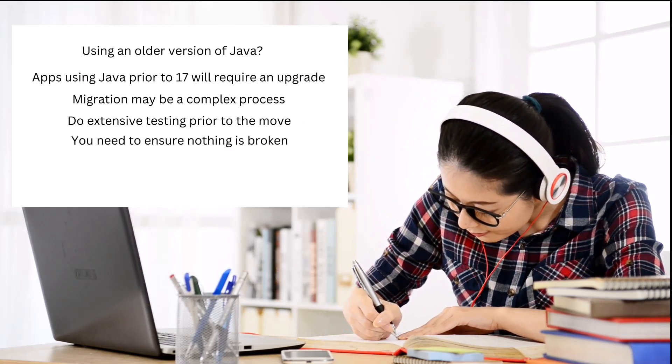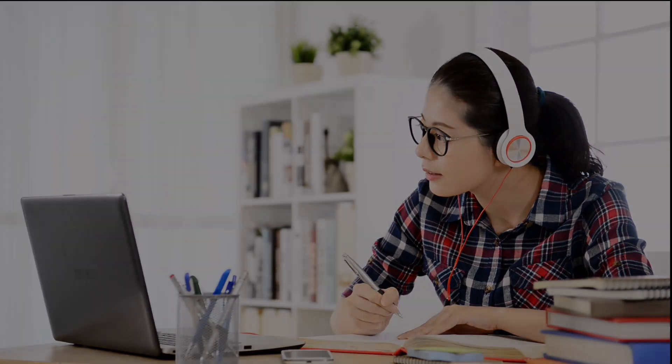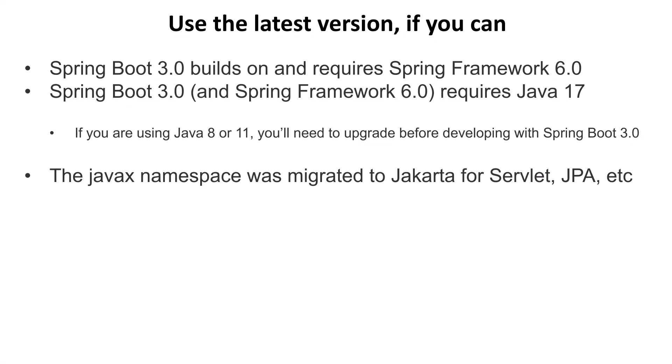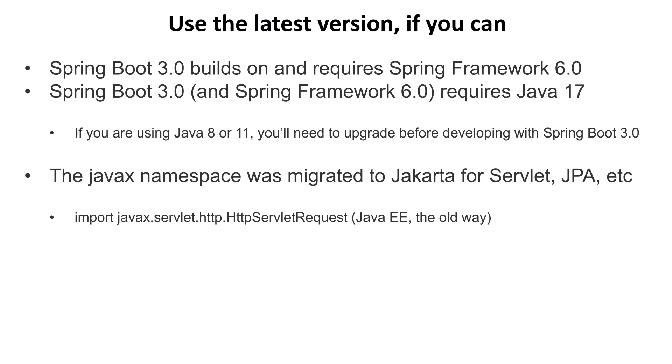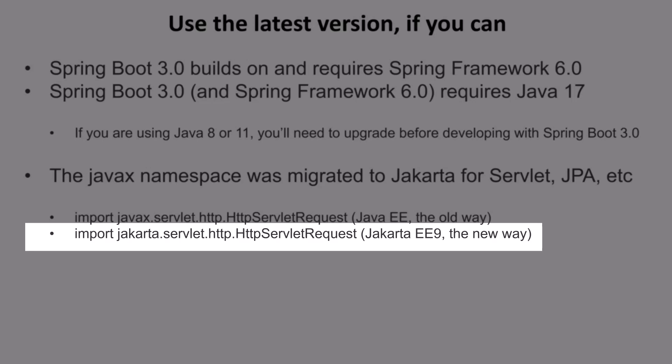At the very least, you'll want to do extensive integration testing to make sure everything still works. The JavaX namespace was migrated to Jakarta in Spring Framework 6 for servlets, JPA (the Java Persistence API), as well as other APIs. For example, if your old code used an import statement like javax.servlet.http.HttpServletRequest — that's the old Java EE way — it's no longer supported in Spring 6. The new namespace is jakarta.servlet.http.HttpServletRequest, which supports Jakarta EE 9.